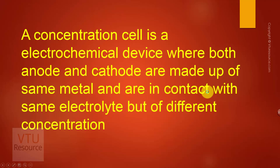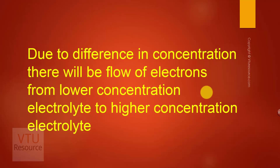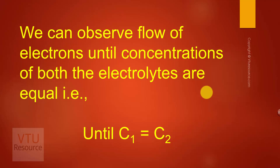A concentration cell is an electrochemical device or galvanic cell where both anode and cathode are made up of the same metal and are in contact with the same electrolyte or metal solution but of different concentrations. Due to the difference in concentration, there will be a flow of electrons from the lower concentration electrolyte to the higher concentration electrolyte. We can observe this flow of electrons until the concentrations of both electrolytes are equal, that is, until C1 equals C2.